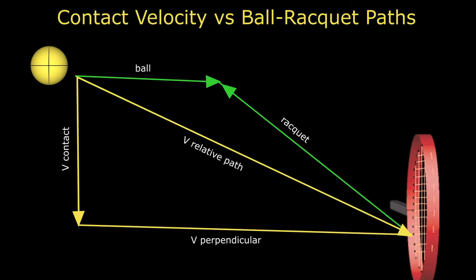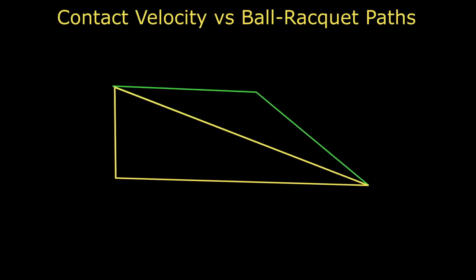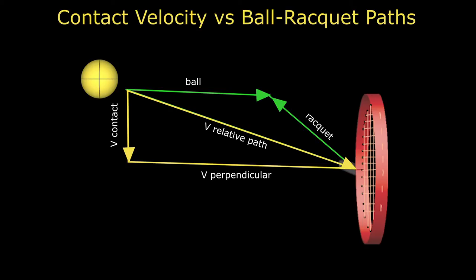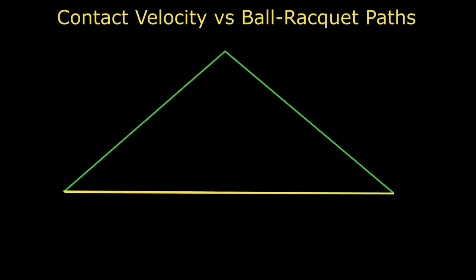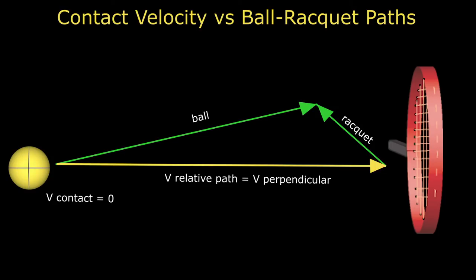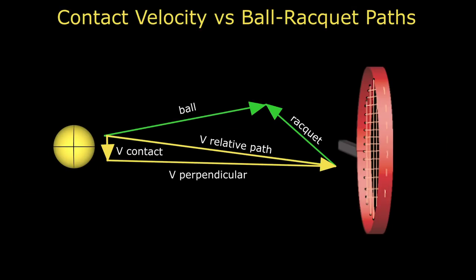The following series of animations demonstrates many possible relative paths and contact velocities that can result from altering the speed and angle of the incident ball and racket paths. It is the comparative speeds and angles that are important. The key to the hitter is for the racket path to be faster and steeper than that of the incoming ball. This will provide more contact velocity to turn into spin, and it can also dial up the spin ratio in the hitter's favor.